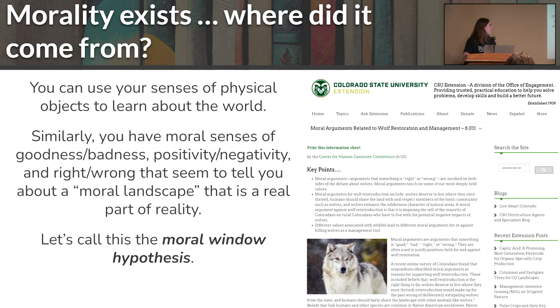So now the last thing, or well, one of the last things, second to last, you're almost done, is morality. So we use our senses of the physical universe to learn about the world. Well, in the same way we use our sense of goodness, badness, positivity and negativity, rightness and wrongness, to try to tell us about the moral landscape, moral oughts or shoulds that we live with in our day are good things or bad things, value. We can call this the moral window hypothesis. And this comes up everywhere.